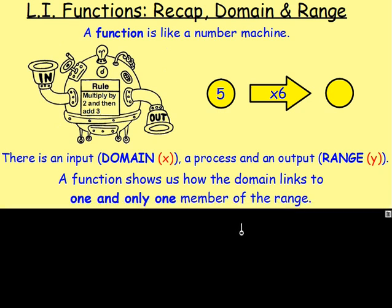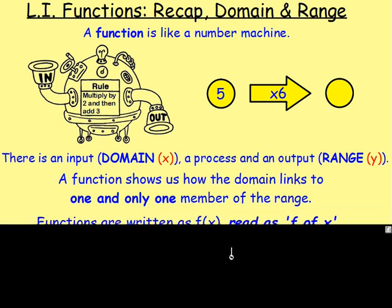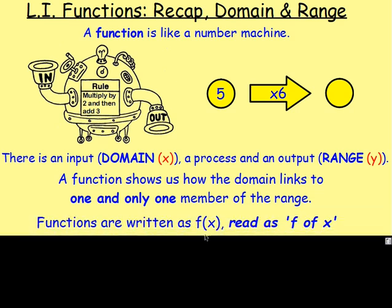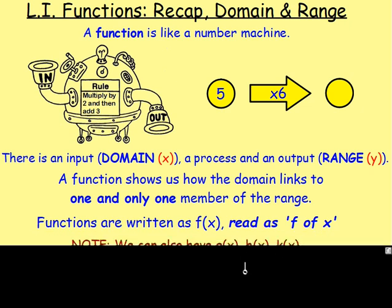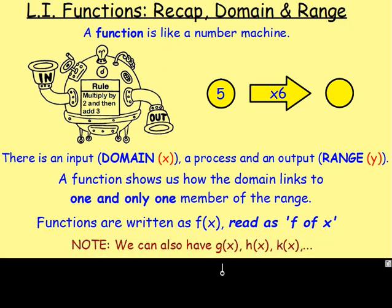Really for any of these, the function shows us how the domain — the number going in — links to one and only one member of the range. So if you put a number in, you're going to get one number out. The way you write functions, the way you did it last year, is you had an f, then brackets, then an x, which you read as f of x. You can use other letters as well — you can have g of x or h of x or k of x.